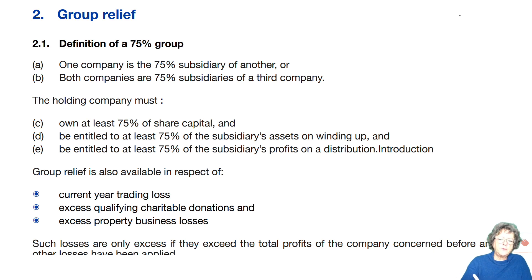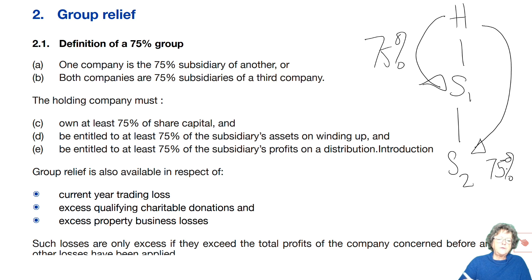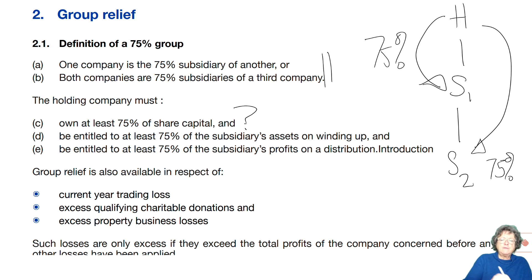So if we have holding company number one, subsidiary number one, and subsidiary number two, the direct holding must be 75% and the indirect must also be 75%. The holding company must have 75% of shares, 75% of the assets on winding up, and 75% of profit distribution. The main bit that matters in practice is the direct and indirect percentage — you just need to know that.